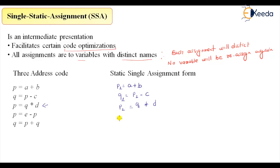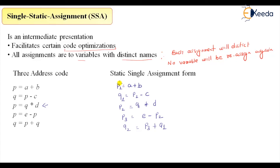Then there is again p with another assignment, so I will say p3 = e - p2, where p2 is the latest version of p. Then there is q again, so q2 = p3. And the q referenced here should refer to q1 only. So this is the three address code, and this is the corresponding single static assignment form.